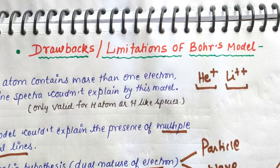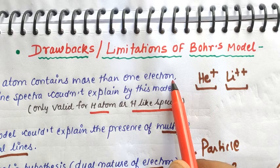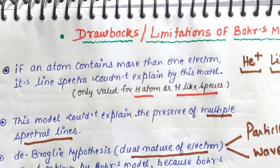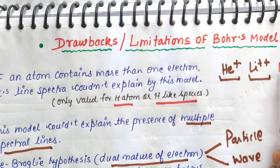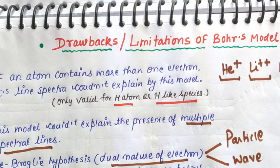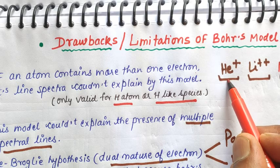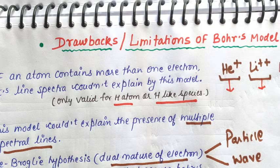The first limitation: Bohr's atomic model is only valid for hydrogen atom or hydrogen-like species — meaning atoms with only one electron. If an atom has more than one electron, its line spectra cannot be explained by this model. It is valid for species like hydrogen, helium⁺¹, lithium⁺², or beryllium⁺³. If any species has more than one electron, this model cannot explain its line spectra.